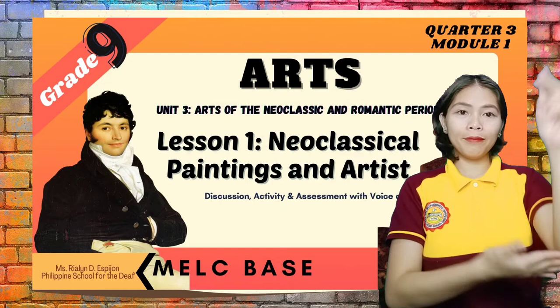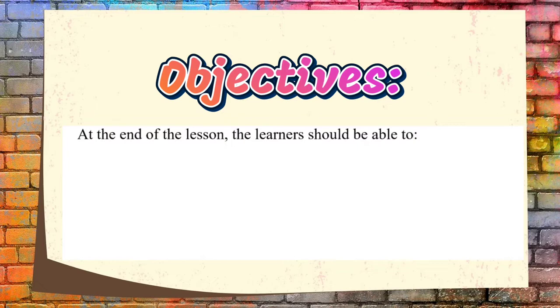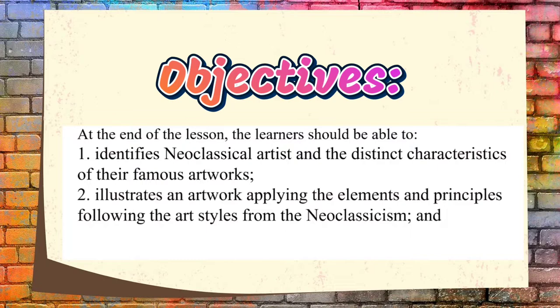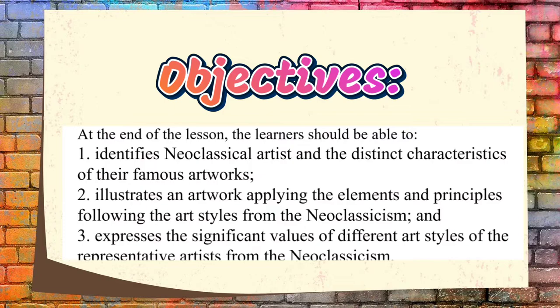Here are the objectives for today's lesson. First, identify neoclassical artists and the distinct characteristics of their famous artworks. Second, illustrate an artwork applying the elements and principles following the art styles from Neoclassicism. Third, express the significant values of different art styles of the representative artists from Neoclassicism.